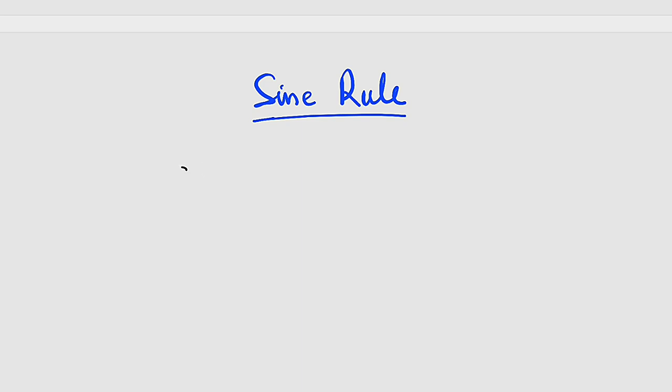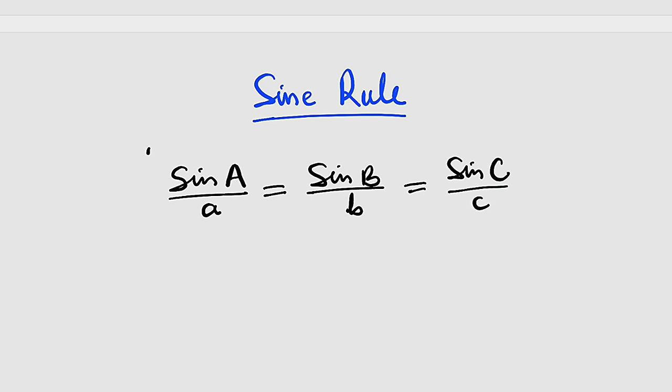The sine rule formula states that sine of angle A divided by the side length opposite to that angle, which is lowercase letter a, is equal to sine of angle B divided by that side length opposite to angle B, which is denoted by the small letter b, and this is equal to sine of angle C divided by the opposite side length to that angle C, which is denoted by small letter c. This is what sine rule states.